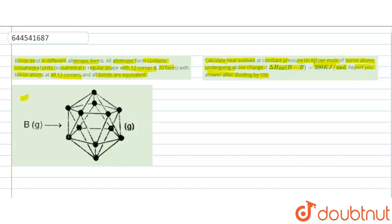So friends, in this question we have to find the heat evolved per mole of boron atom, and this will be equal to 5/2 × 200, and it will be 500 kilojoule.